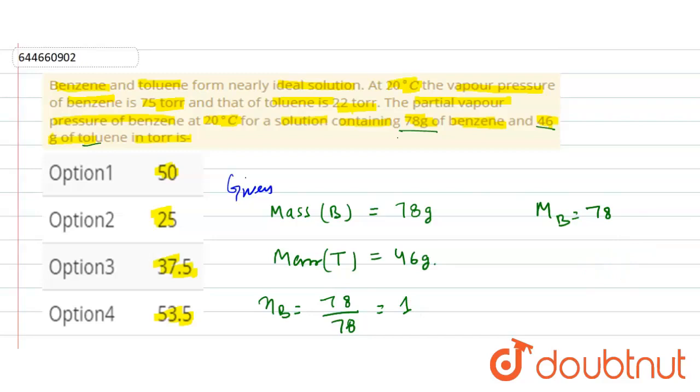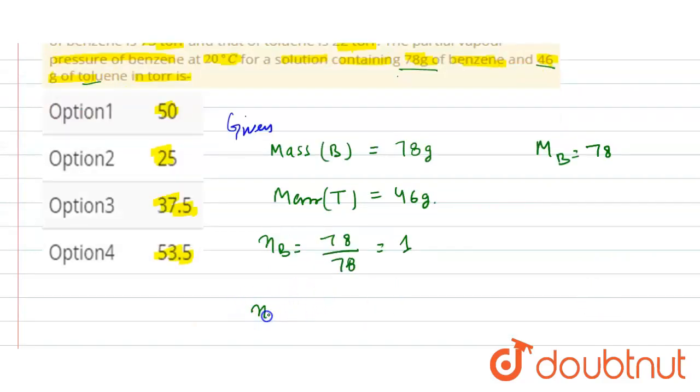So next, number of moles of toluene is mass of toluene, which we have given is 46, divided by molar mass of toluene, which is 92. So from here we get 0.5.